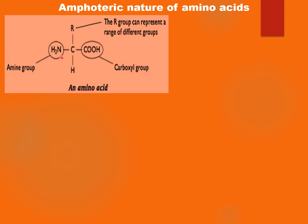The amino acid has got the amino group and the carboxyl group. This carboxyl group is a proton donor — in other words, it can give out its proton. A substance that is capable of doing that is known as an acid, since an acid is a proton donor.